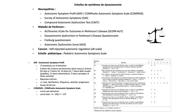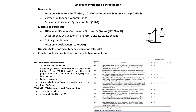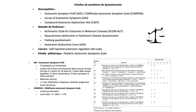Voilà quelques exemples de scores d'échelles de symptômes de dysautonomie : l'Autonomic Symptom Profile, le COMPASS, très utilisé en neurologie dans les neuropathies, le Survey of Autonomic Symptoms. Tous ces questionnaires ont fait l'objet de validations, mais malheureusement ils ne sont pas validés en français pour la plupart, à part le SCOPA qui a fait l'objet d'un article récent sur la maladie de Parkinson. Chacun comporte un certain nombre de questions quantifiées.